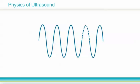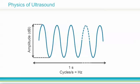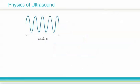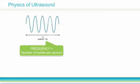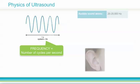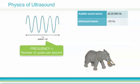An acoustic wave can be described using four characteristics: its amplitude, frequency, propagation velocity, and wavelength. The frequency of a wave is measured in hertz, or number of cycles per second. Waves with a frequency of 20 to 20,000 hertz are audible to the human ear. Waves with a frequency less than 20 hertz are considered infrasound. Elephants use infrasound to communicate with each other across long distances.